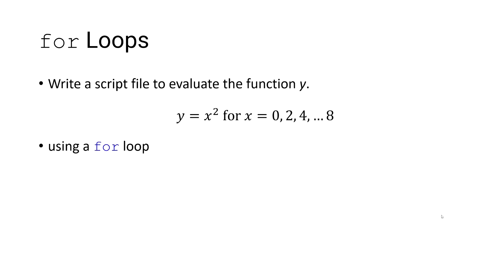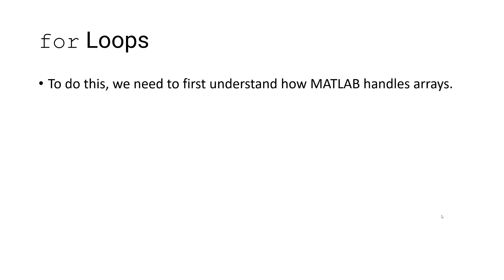In this video we're going to write a script file to evaluate the function y, where y is equal to x squared, for x starting at a value of 0 and ending at a value of 8 in increments of 2. And we're going to do this using a for loop.